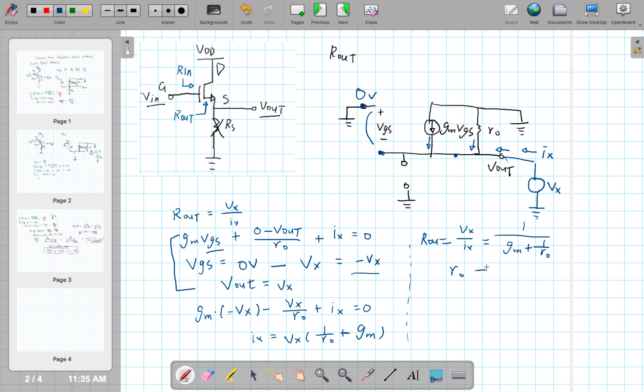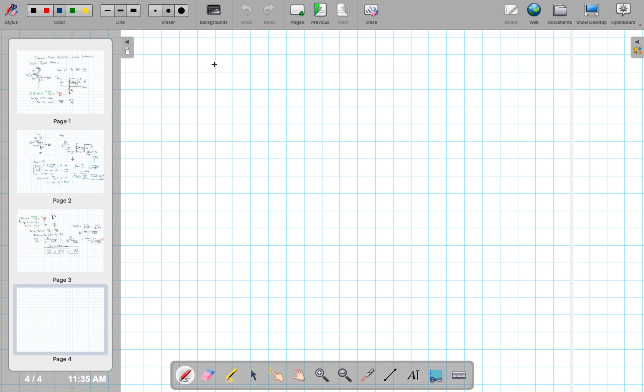Since we know that r0 is large, this term goes away. So, rout is approximately 1 over gm. We know gm is somewhat large, so 1 over gm is somewhat small. So, I'm going to just say it's small-ish.